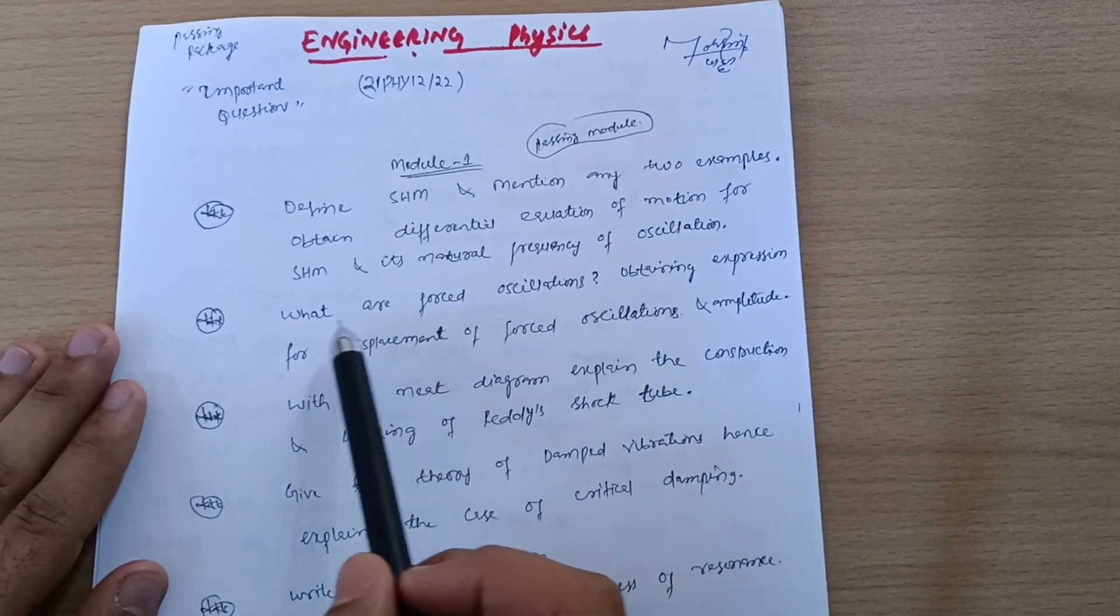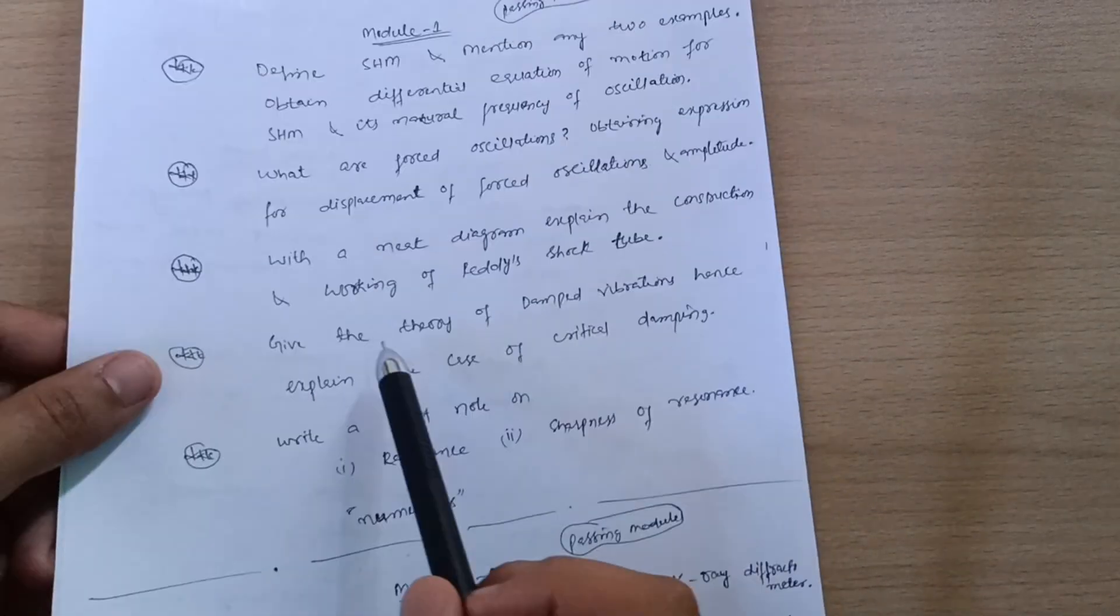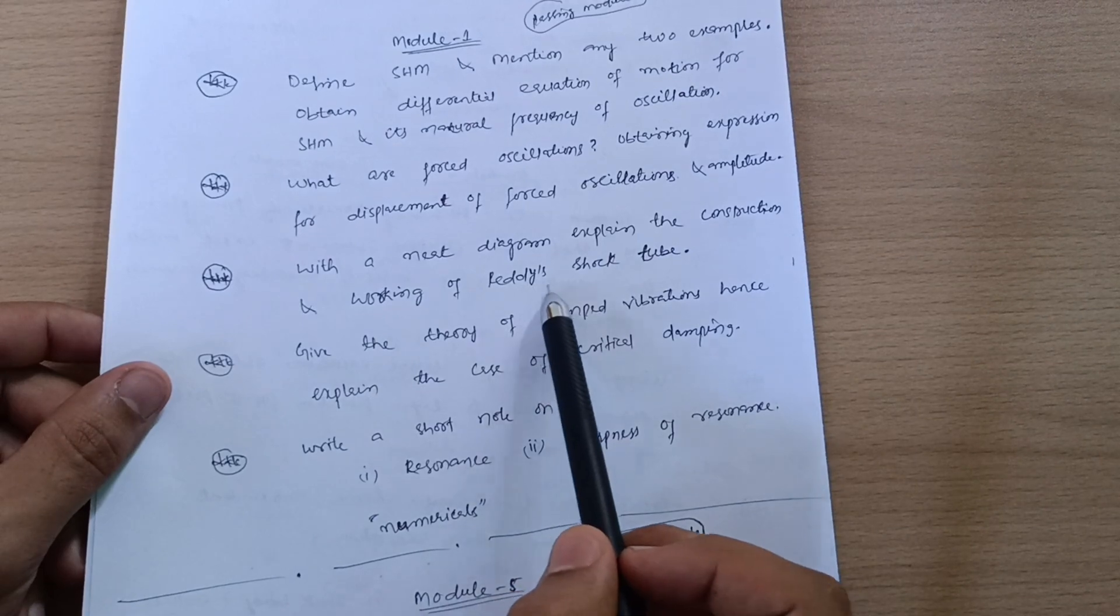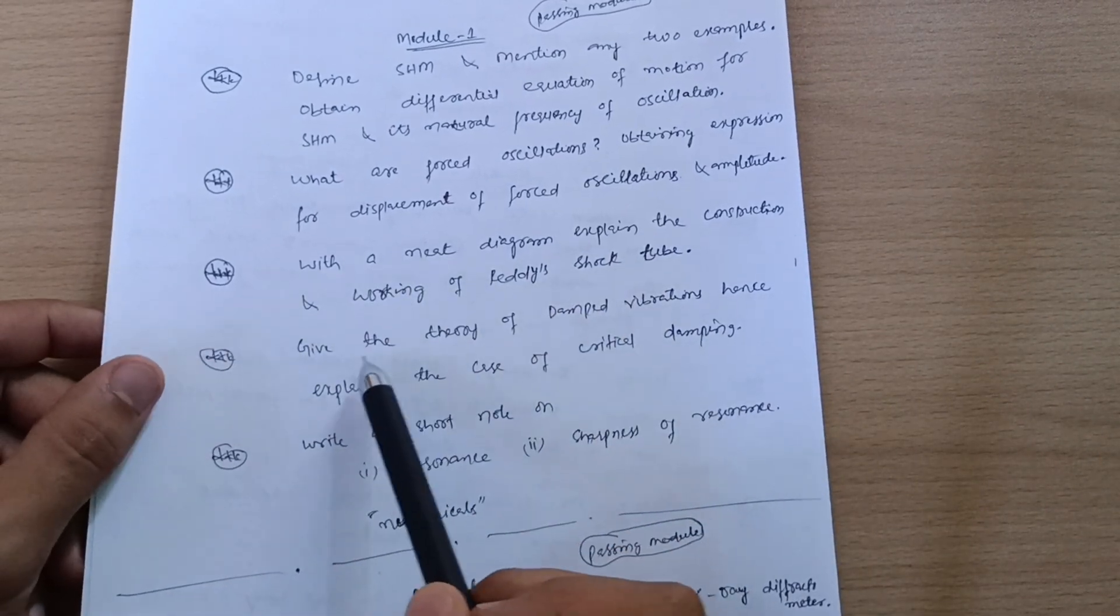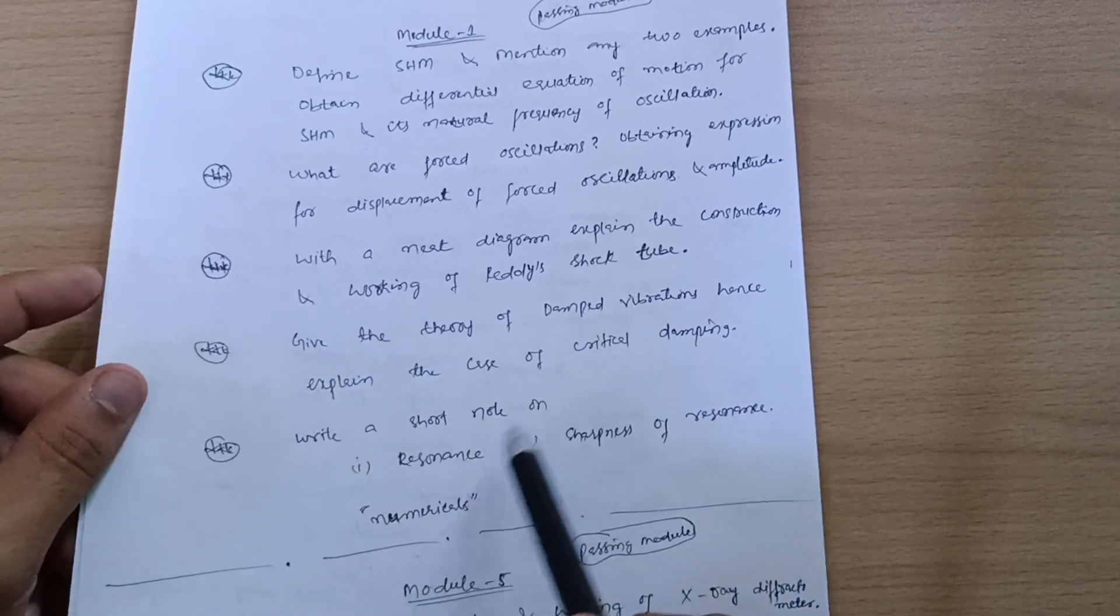Most of the students are leaving this. It is very simple derivation but lengthier one. I will provide the link in the description box. You can avail the video of forced oscillations and also damped oscillations which I will discuss here. With a neat diagram, explain the construction and working of Reedy shock tube. Super important question. Give the theory of damped vibrations. Hence explain the case of critical damping.